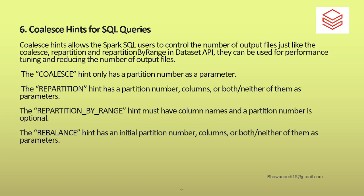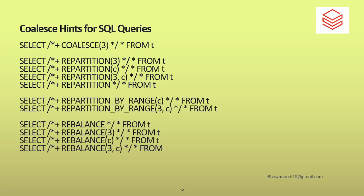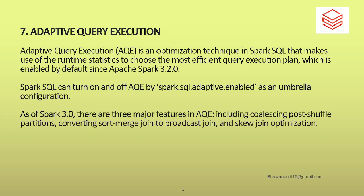The sixth point is coalesce hints for your SQL queries. These are very similar to repartitioning and coalesce — I've created a video on that as well, and I'll leave the link in the description box. Coalesce hints in Spark SQL help you control the number of output files, just like coalesce and repartition do. Options include coalesce, repartition, repartitionByRange, and rebalance — all very useful in Spark for reducing the number of output files. You can use coalesce hints directly in SQL queries as well.